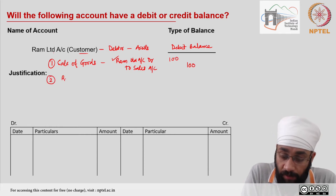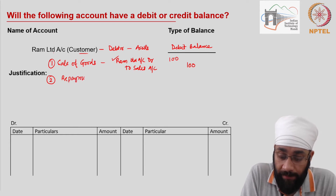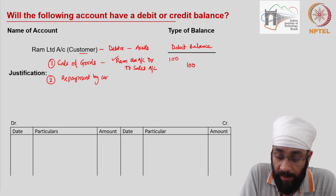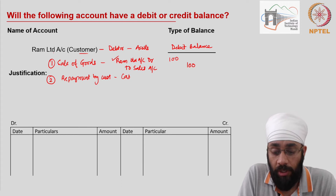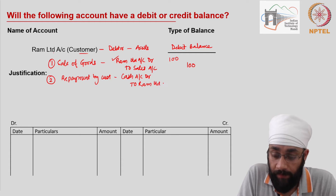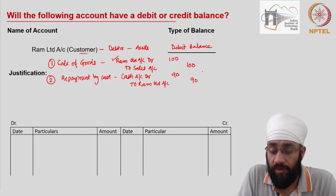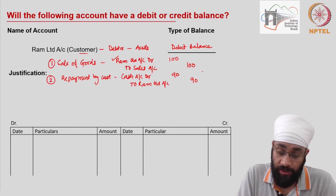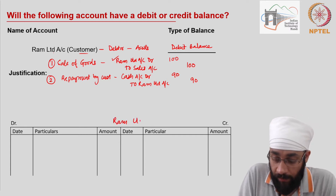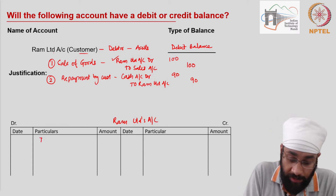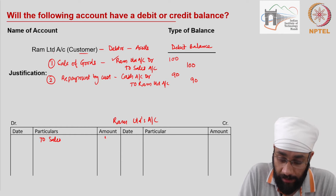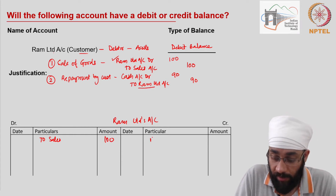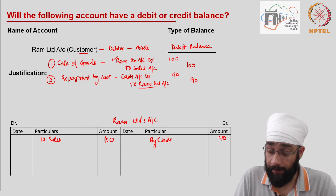You are selling on credit and making Ram a debtor by giving him a debit, so let's say the amount is 100. Then you could recover this money by repayment from Ram Limited. When you receive the payment, you say cash account debit to Ram Limited's account — and let's say you receive 90 out of that. In Ram Limited's ledger account, the first transaction is 'to sales' on the debit side for 100, and the second transaction is 'by cash' on the credit side for 90.